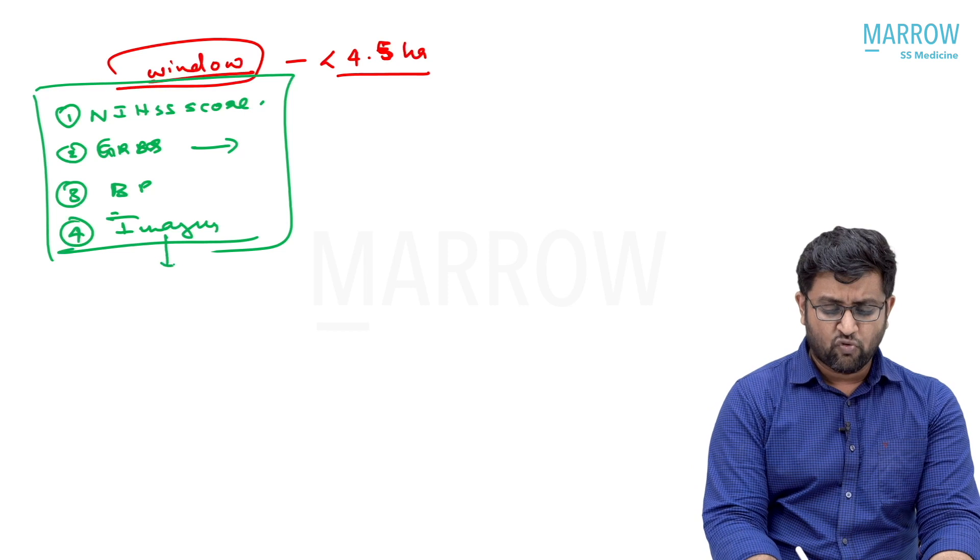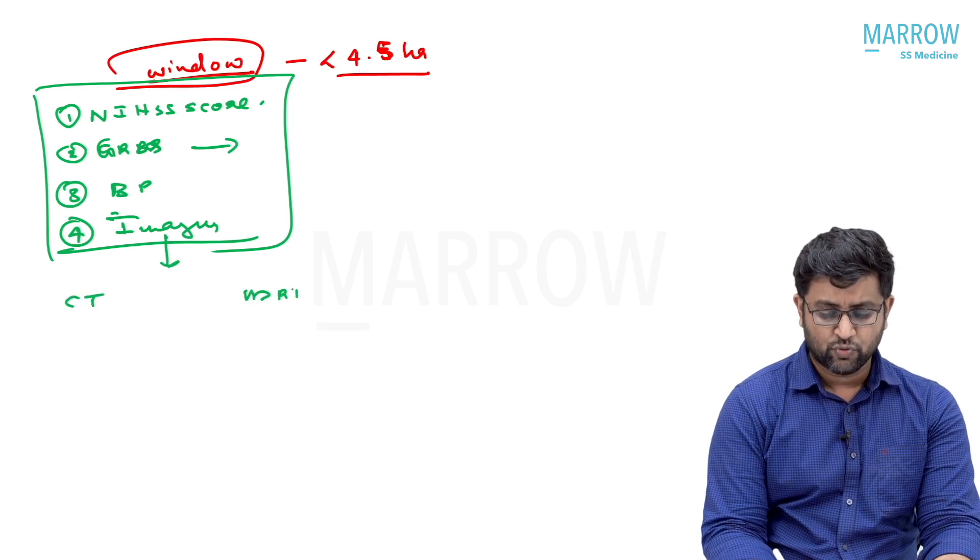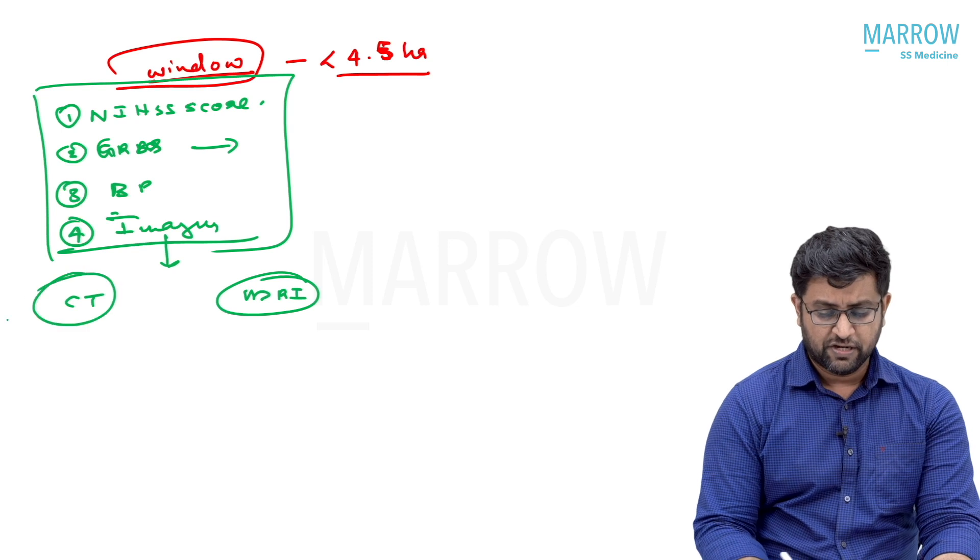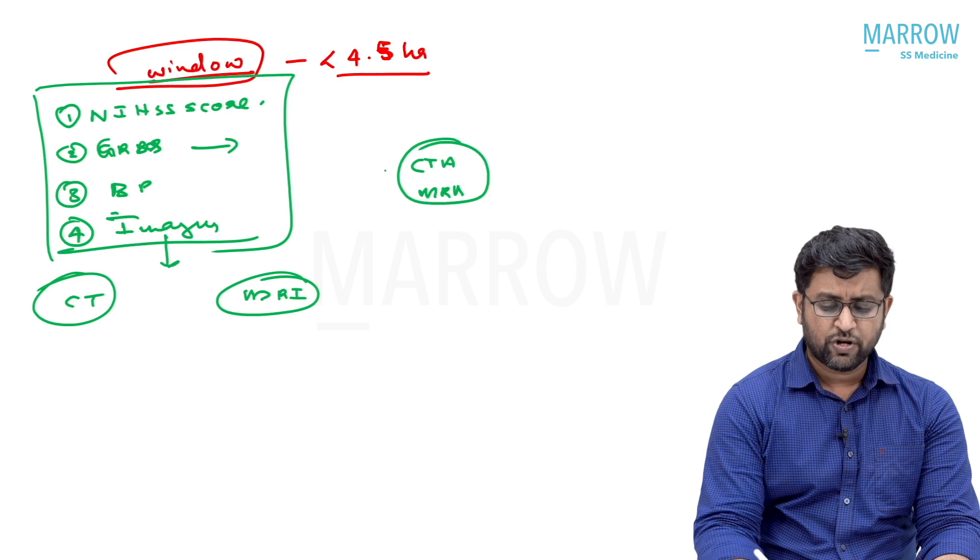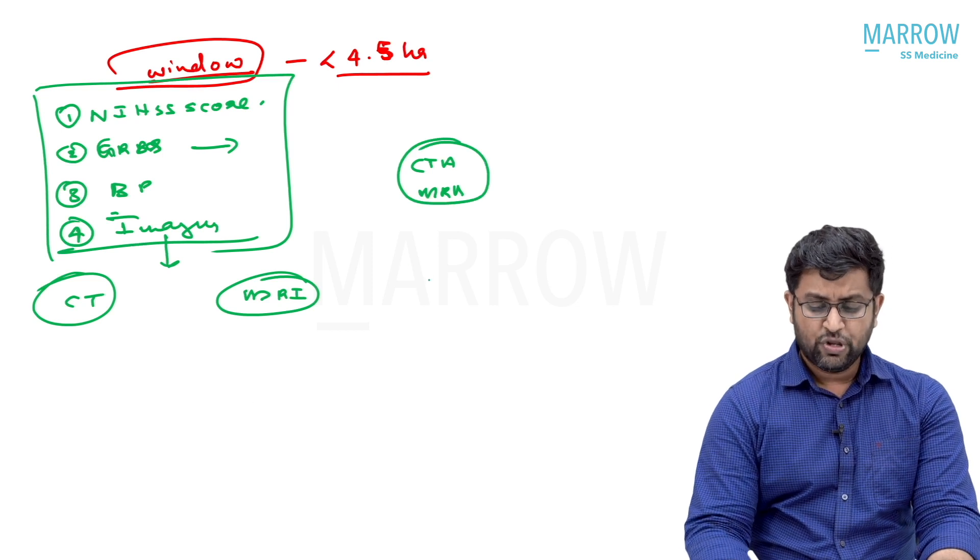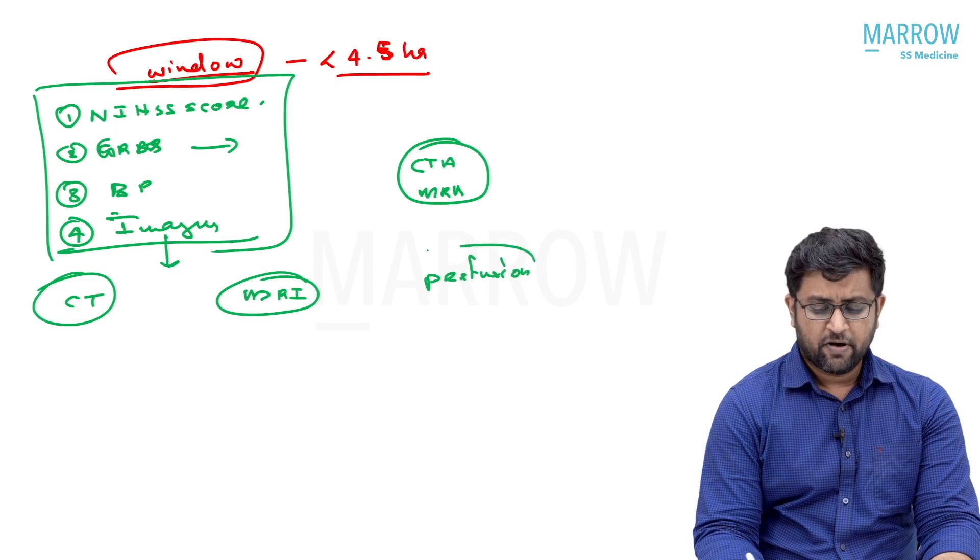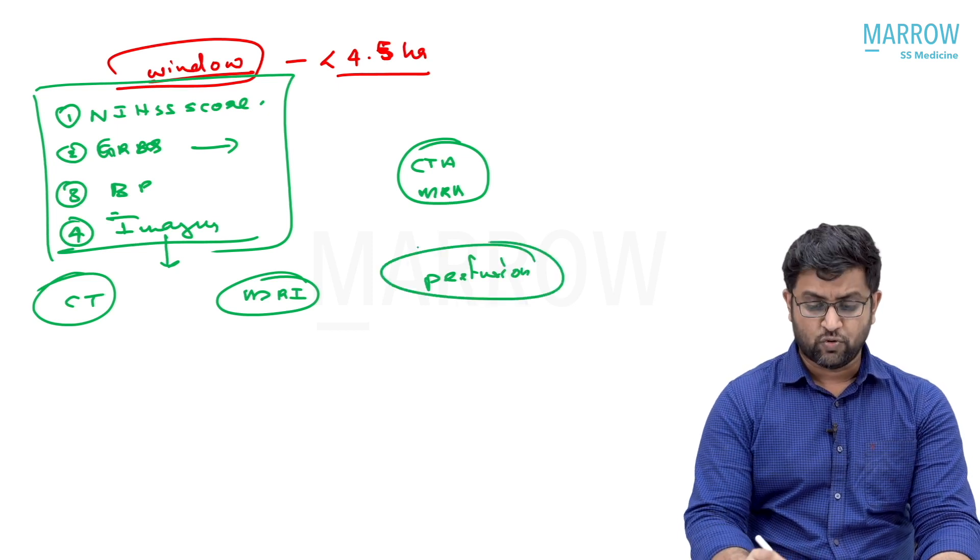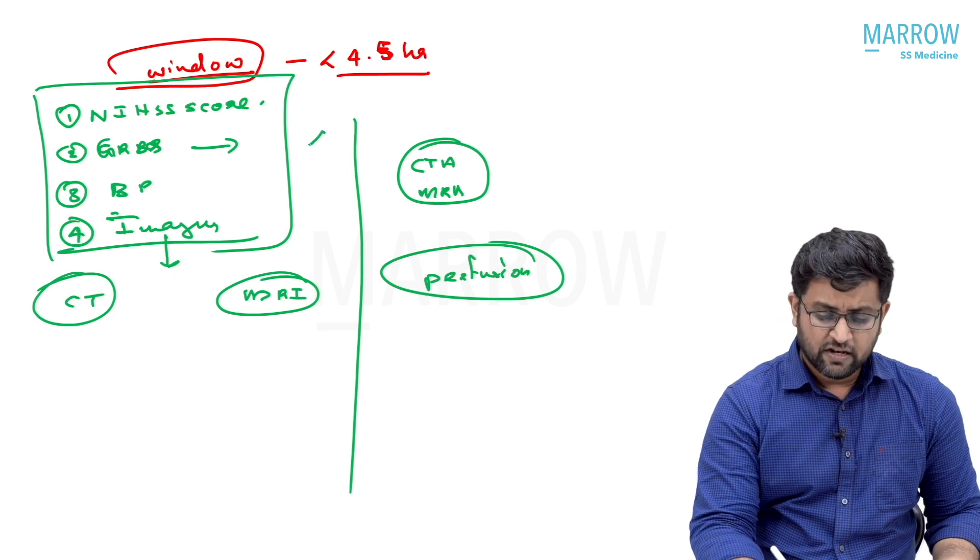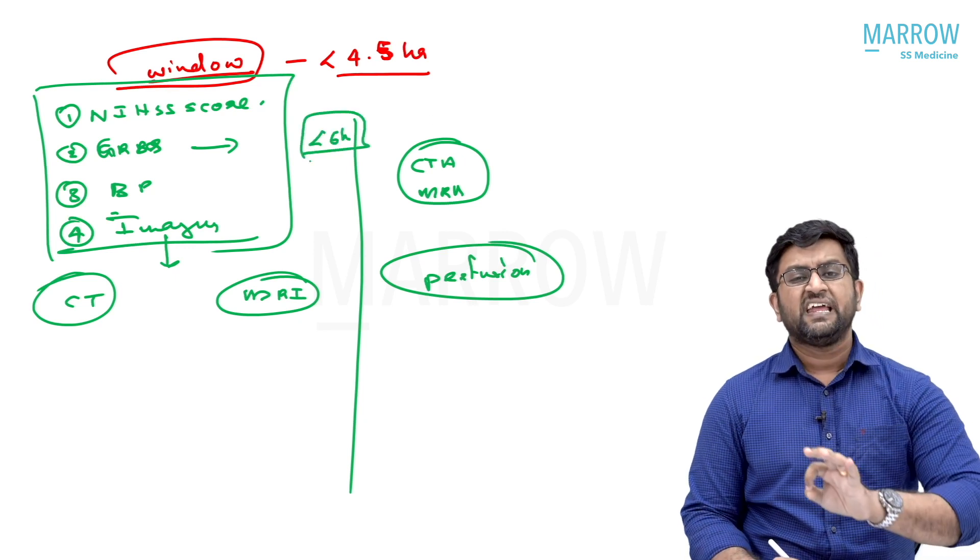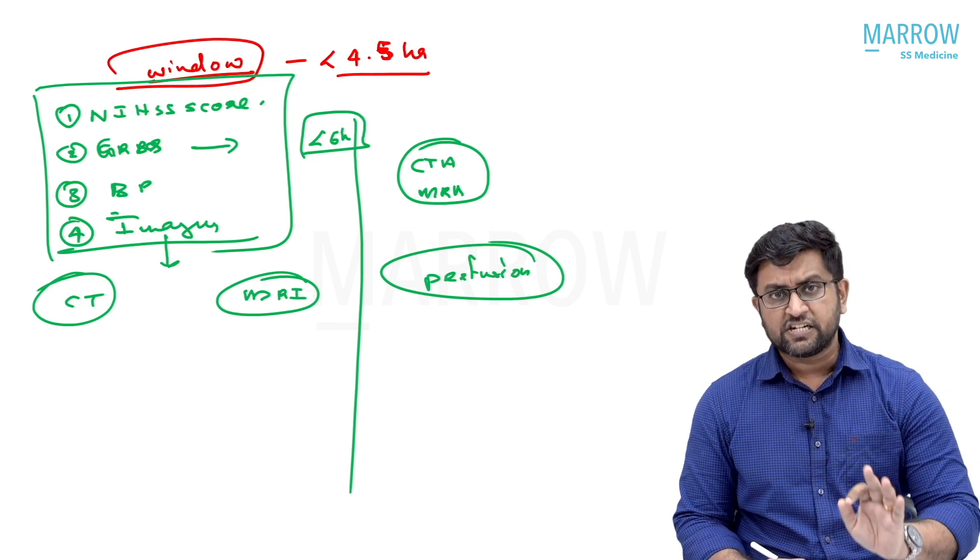The next question is what imaging should you do? You have CT, you have MRI, what imaging should you do? Then you have additional imaging like CT angio, MR angio, or you have perfusion studies like MRI and CT perfusion. Initially, within six hours, less than six hours from onset, you do not need any additional imaging as per the guidelines. Any additional imaging.